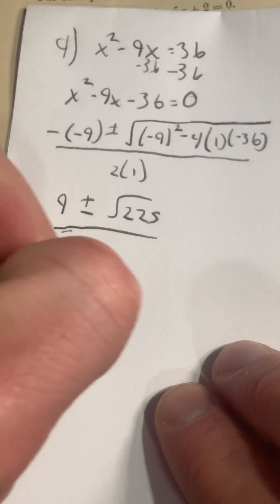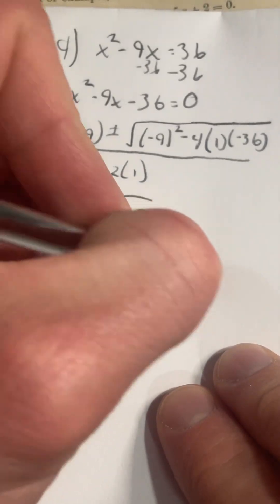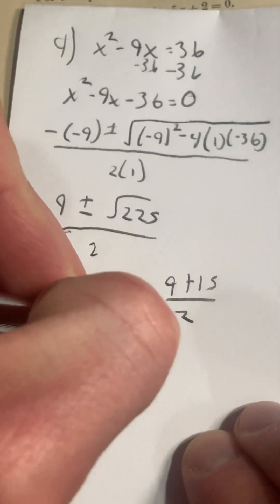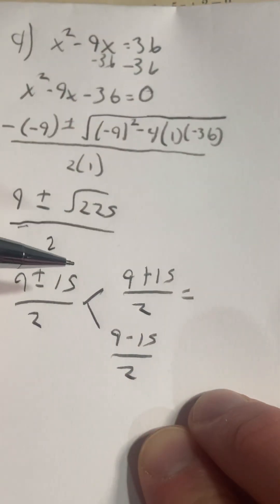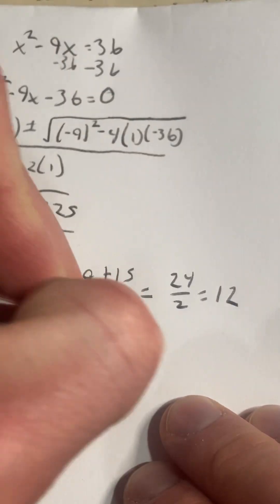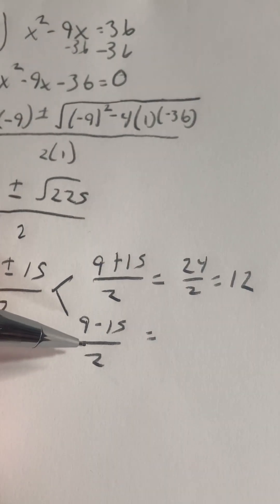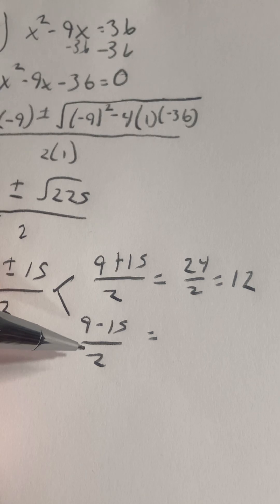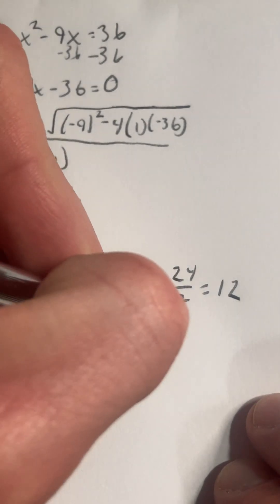So then we'd have our branch off here. So 9 plus 15 over 2, 9 minus 15 over 2. 9 plus 15 is 24 over 2, which is 12. And 9 minus 15 over 2, be careful here, that is going to be negative 6 over 2, which is negative 3.